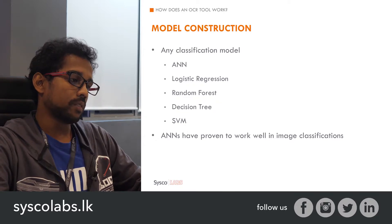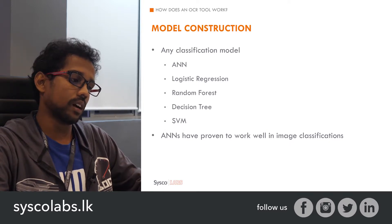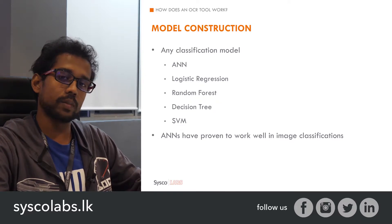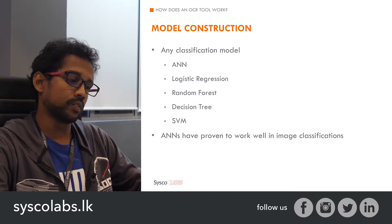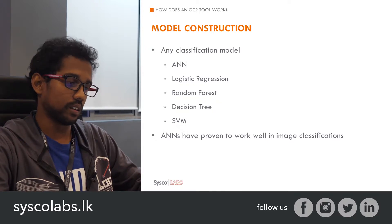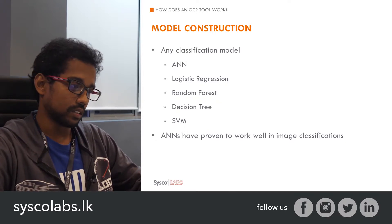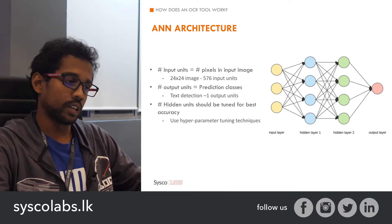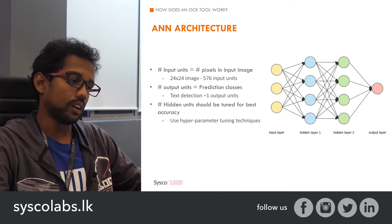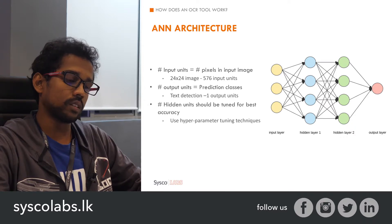All these phases are related to machine learning, and we need to construct machine learning classification models for every phase. There are several classification models available: artificial neural networks, logistic regression, random forest, decision tree, and support vector machine. Studies show that artificial neural networks have proven to work well in image classification. For the ANN architecture, there are three things to figure out: the number of input units, output units, and hidden units.